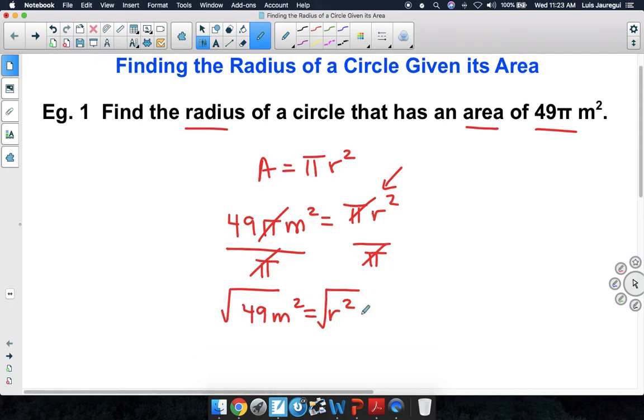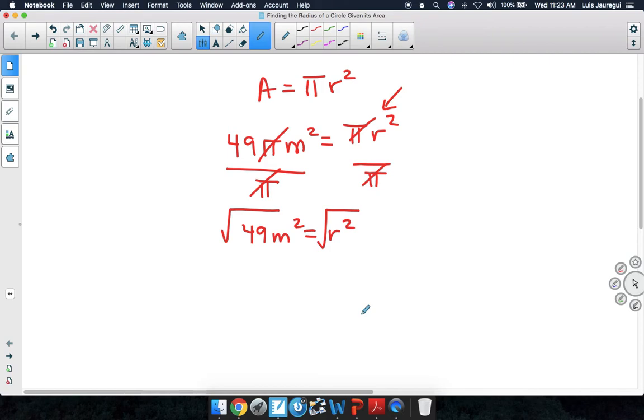By doing so we get the square root of 49 which happens to be 7 and we take the square root of m square which happens to be m. Now on the right hand side we're going to get the square root of r square. The square root of r squared is simply r.